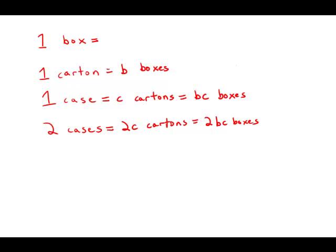If we have one box, we have 100 paper clips. So if we have a carton, we have B boxes, each with 100 paper clips, which would be 100 times B paper clips. If we have a case, we have B times C boxes, each with 100 paper clips, so that would be 100 times BC paper clips.